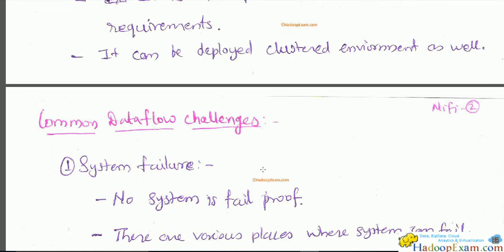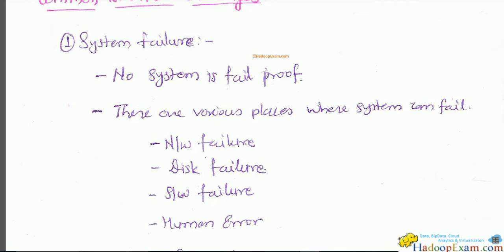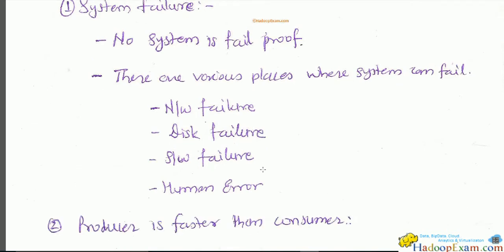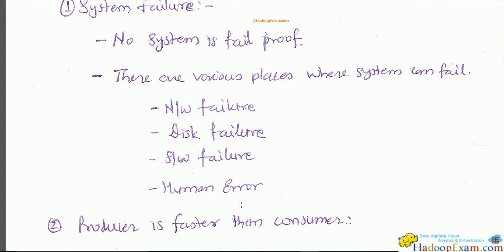Common data flow challenges: system failures. No system is fail-proof — there are various places where a system can fail: network failure, disk failure, software failure, human error. This has to be taken care of in the system. NiFi provides support for handling these situations. NiFi can be deployed in a clustered environment to avoid disk failure, software failure, or network failure. Human errors can be recorded and you can replay things after correcting the error.